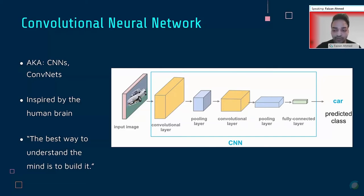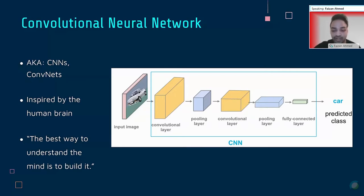CNNs resemble human vision because the way we recognize people or places is through signals from our eyes that flow sequentially through our visual cortex through multiple stages, where increasingly complex features of a scene are processed. These stages in our visual stream correspond to convolutional layers in a CNN. The entire concept of a CNN is based on our visual perception — as the quote says, 'the best way to understand the mind is to do it.' That is exactly the goal of deep learning and computer vision: to mimic the human brain.